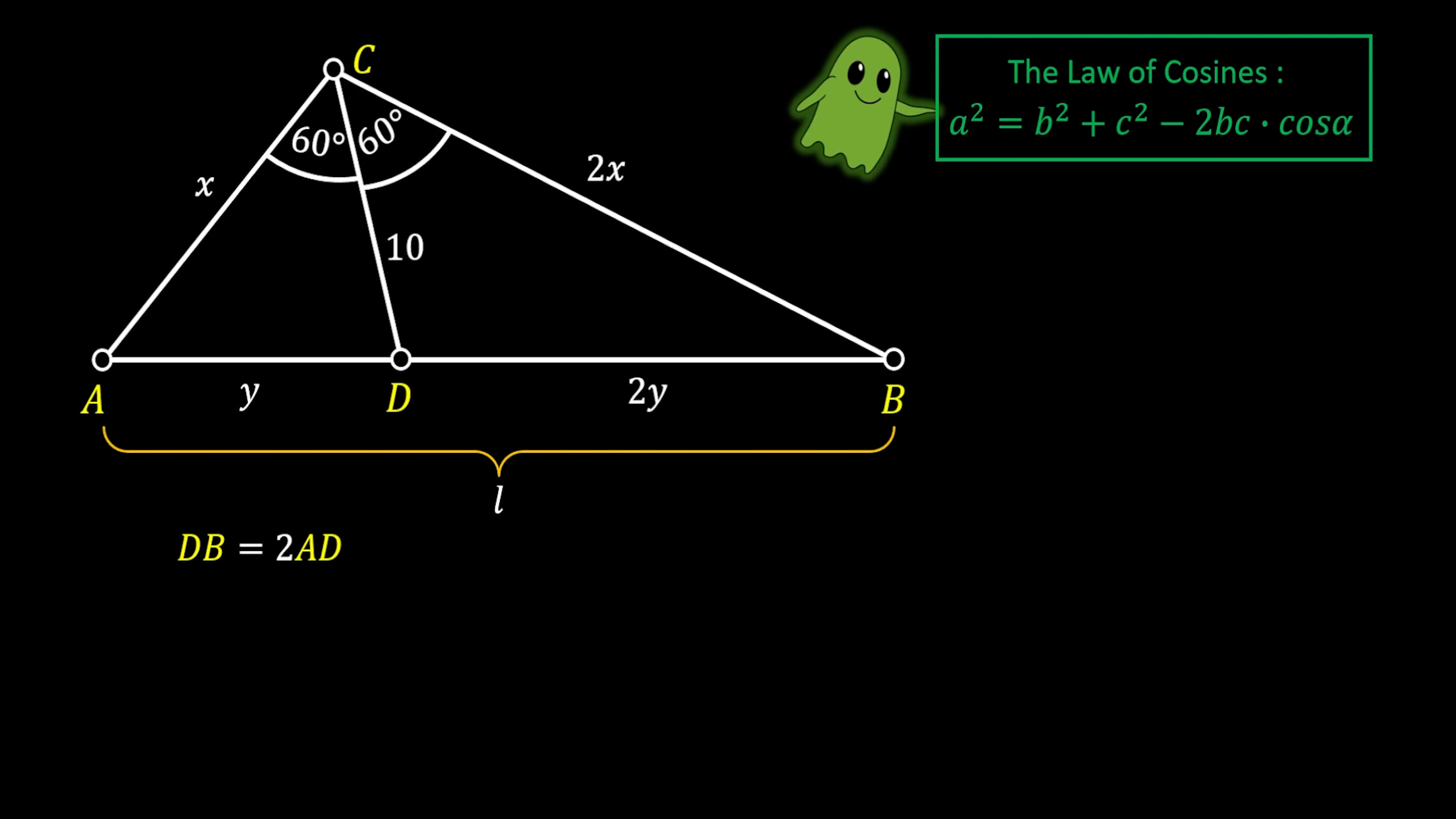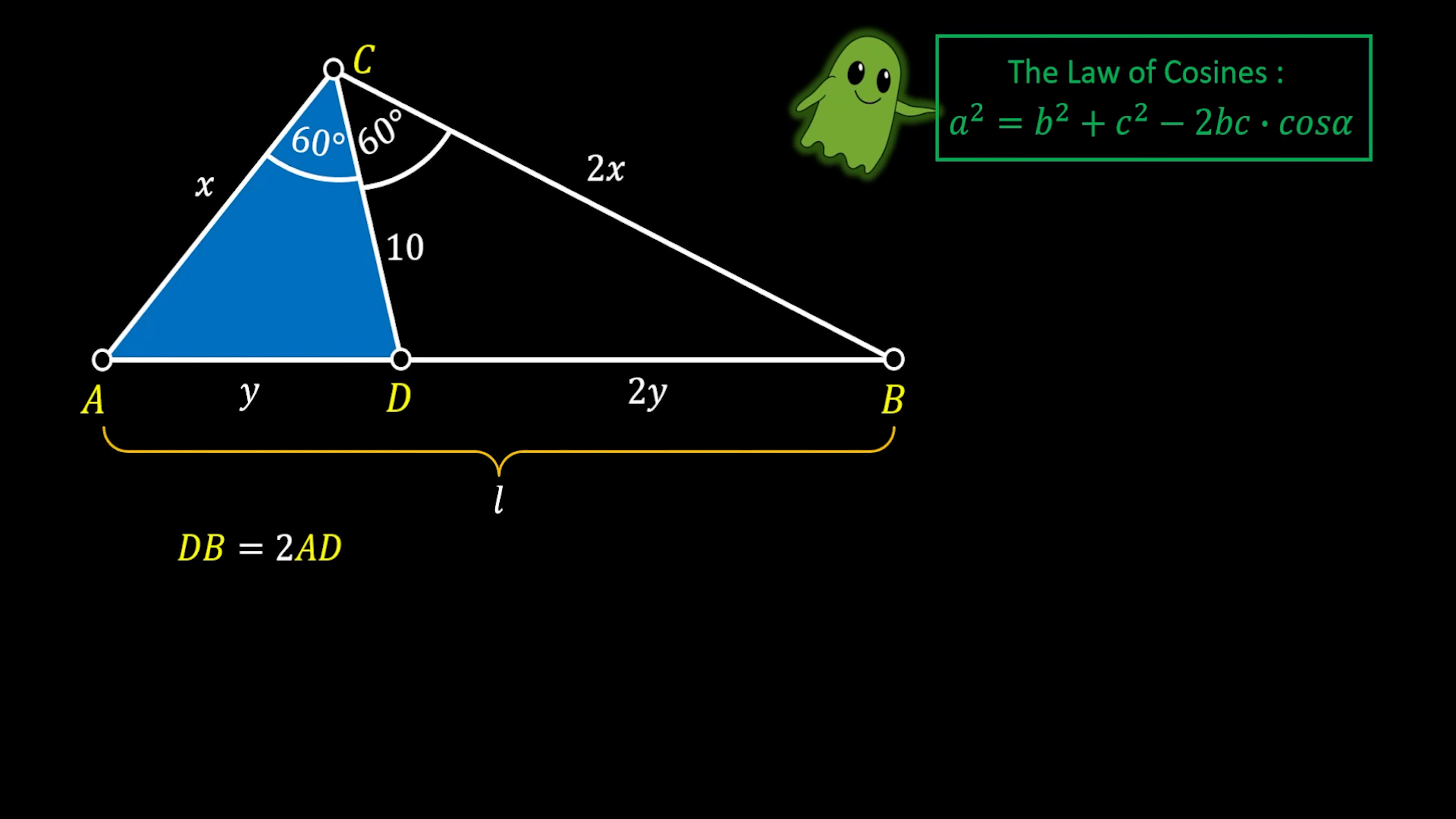So we are going to use this law first in our blue triangle ADC. And we will use it on the side Y. So Y squared will be equal to X squared plus 10 squared minus 2 times X times 10 times the cosine of the angle between X and 10, which is 60 degree angle. From trigonometry, we know that cosine of 60 degrees is equal to 1 over 2. And finally, we will get that Y squared equals to X squared plus 100 minus 10X.